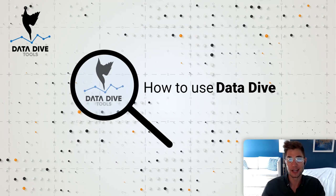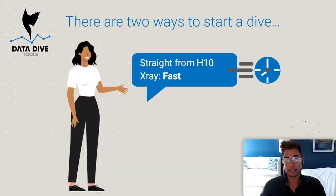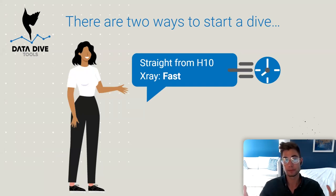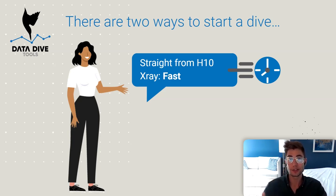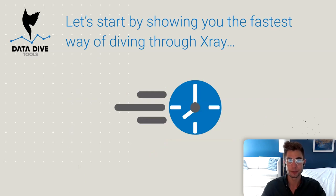Everything is going to go through the Chrome extension — you need a separate Chrome extension to get Data Dive to work. Once you're inside the extension, we use the numbers run from Helium 10, pulling in their numbers. There are two ways to start a dive: one is straight to X-Ray, which is the fast way, and the more precise way is using the ASIN tray. I'm going to show you both.